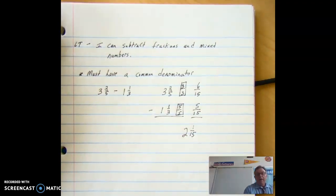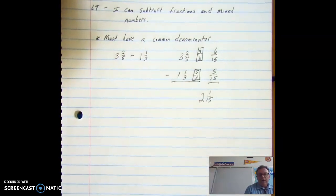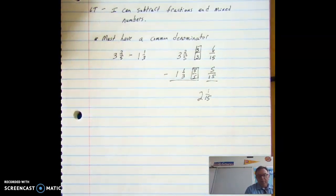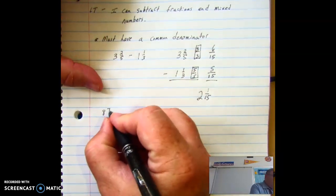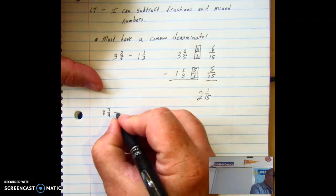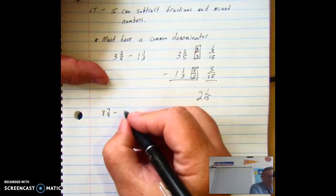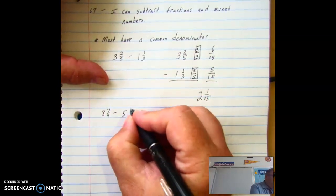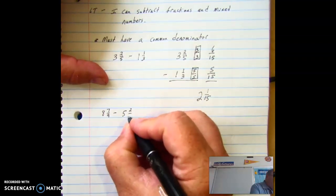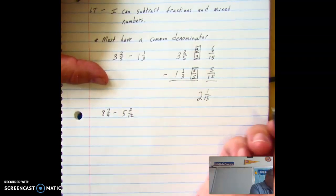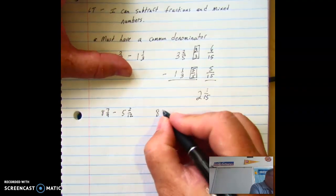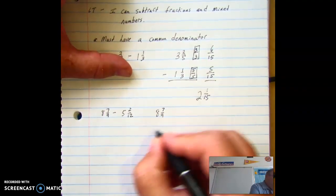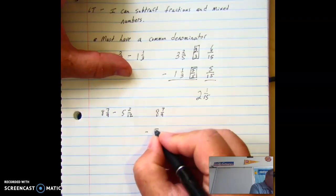Okay. Now that should be pretty straightforward. Let's look at one that's maybe a little bit more complicated. 8 and 7 ninths minus 5 and 2 twelfths. So same deal, I'm going to go ahead and I'm going to set mine up vertically. That's a personal preference.